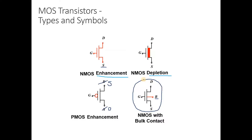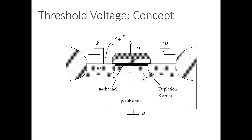The threshold voltage concept is very important. Threshold voltage is the minimum voltage required for overcoming certain adversities. In the MOS channel, the adversity is that there is no channel — the channel is created only after a certain potential is applied.